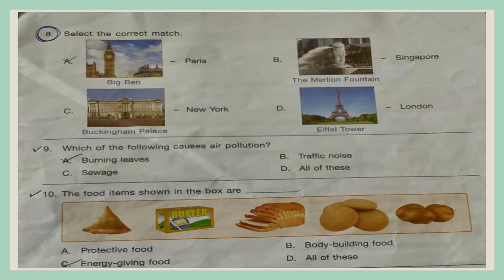Question 10. The four items shown in the box are: A. Protective food, B. Body-building food, C. Energy-giving food, D. All of these.